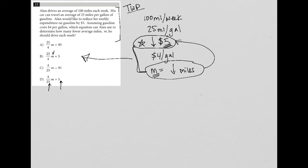I think we're going to say, hey, if I put an M value in here and multiply by either twenty five fourths or four twenty fifths, I'm going to get out this five dollar savings that I want. So because of that, I'm going to say C and A are crossed out.